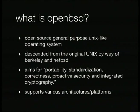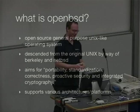OpenBSD is just another Unix. It actually descends from the original Unix by way of Berkeley and NetBSD. The website states that it aims for portability, standardization, correctness, proactive security, and integrated cryptography. We currently run on about a dozen architectures, and we like it that way. Different architectures expose different code behaviors and different bugs in software, so just running on another CPU lets us improve things in other portions of the tree in a machine-independent way.